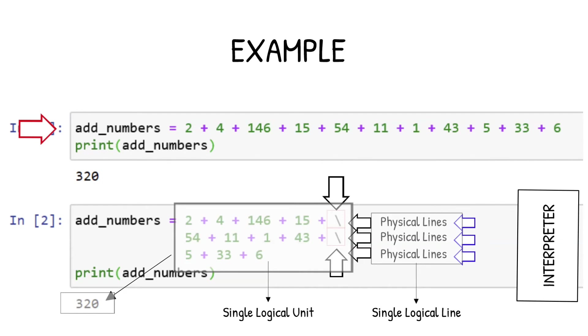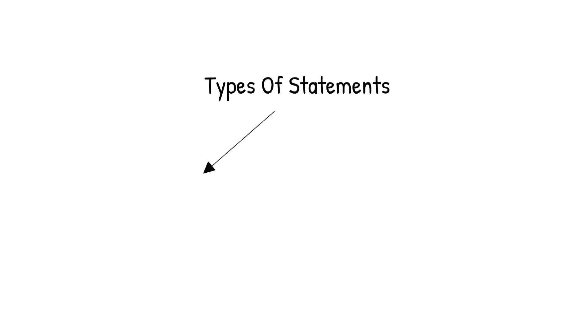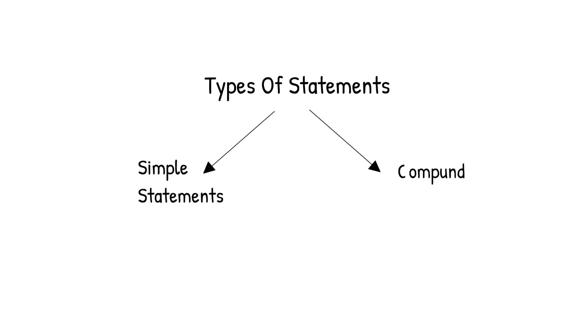I hope the single-line and multi-line statement concept is clear. If you have any doubts, ask your questions in the comments section. Now let us move forward to our next topic: what are the types of statements in Python? Python statements can be mainly categorized into two parts: simple statements and compound statements.